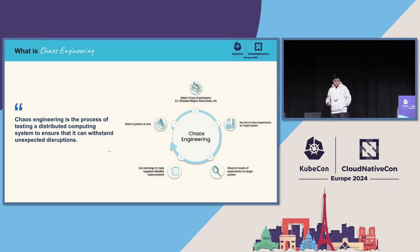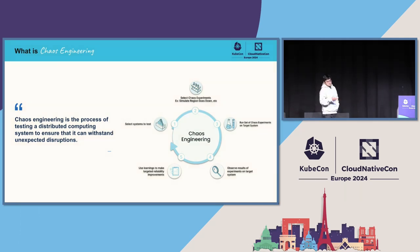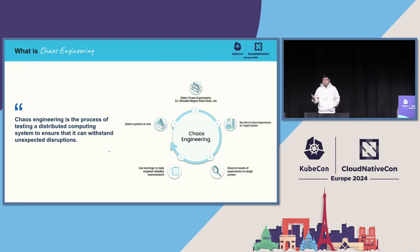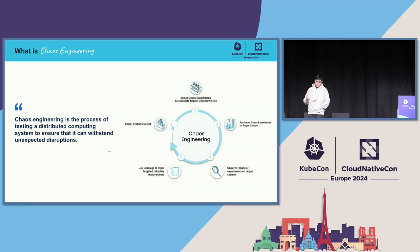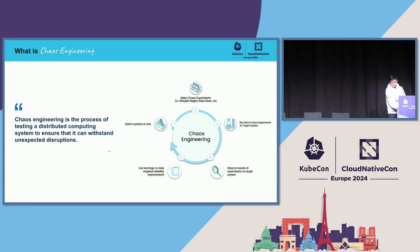Chaos engineering is a practice where we deliberately break our systems — typically in production, though it doesn't have to be — to ensure they can withstand unexpected disruptions. The core model works like this: select chaos experiments to test your applications, run a set of targeted experiments, observe the impact, use the learnings to make your application more resilient, and then select the next system to test. This cycle — steps one through five — keeps repeating, and these are the core principles of chaos engineering.